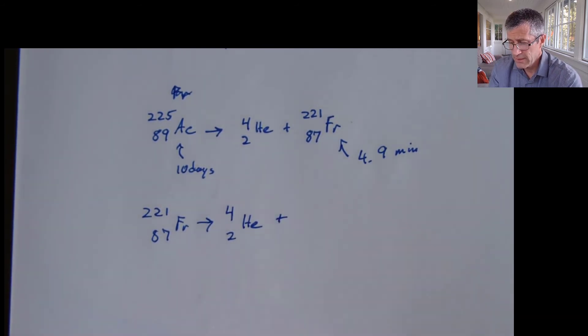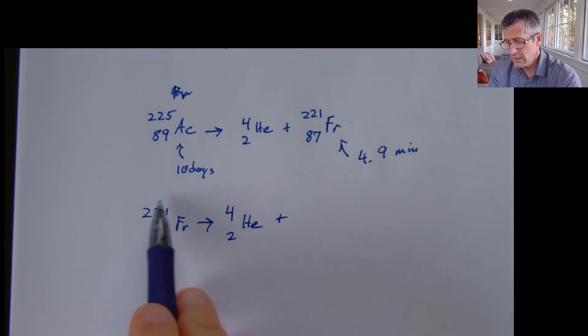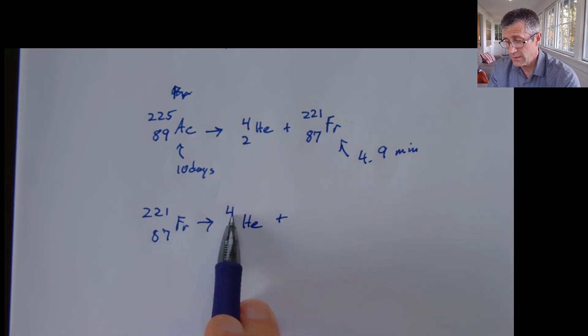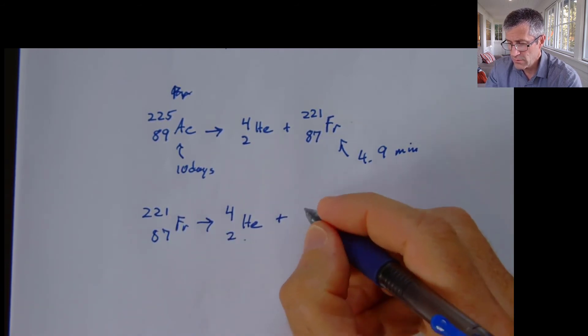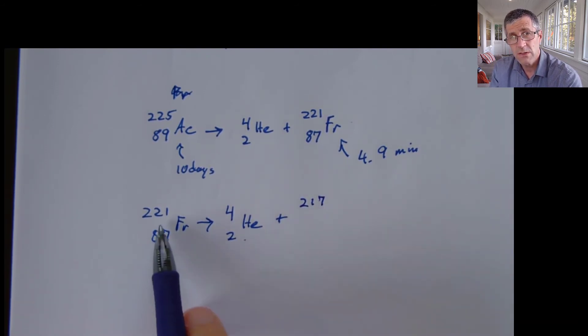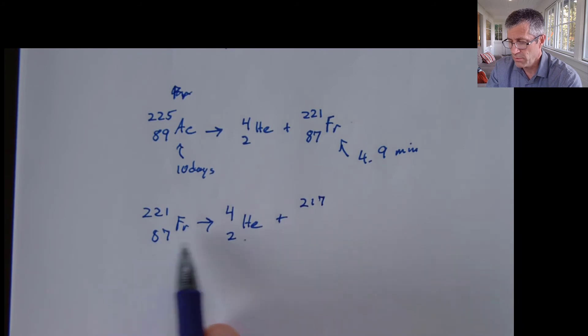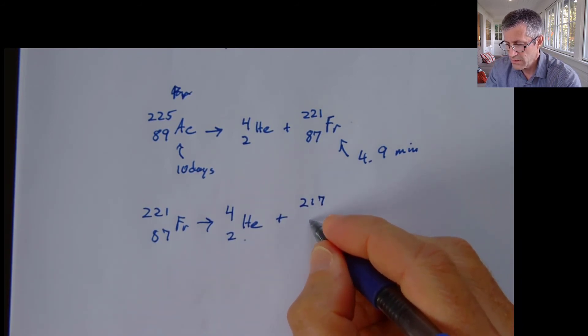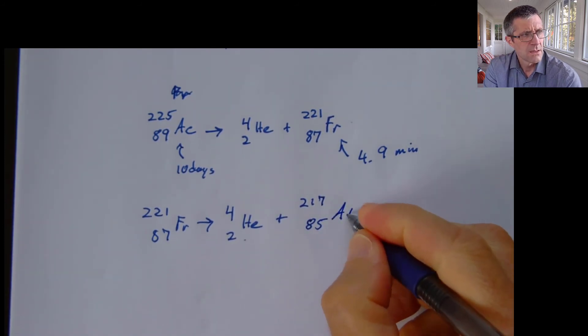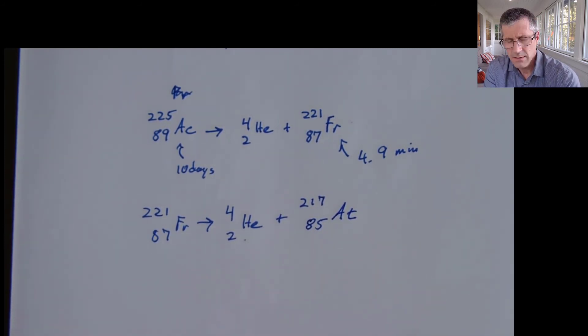And I'm going to be left with something else. The question is, what else am I left over with? Well, let me add this up. So again, the mass I start with has to equal the mass I end with. So I started with 221. 4 of it got kicked out in this alpha particle. So I must be left with 217 for a mass. I started with a charge of 87. I lose an alpha particle, which has a charge of 2. So I must be left with 85. What's 85? Astatine.